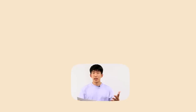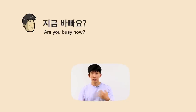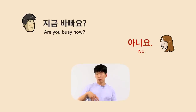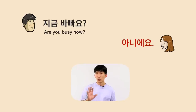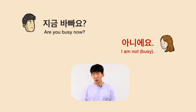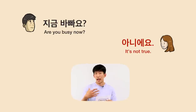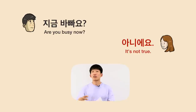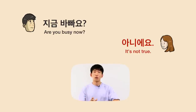Some examples: somebody can say 지금 바빠요, and you can say 아니요 — three syllables — which means 'no.' Or, given the same question 지금 바빠요, an answer can be 아니에요, which means 'I'm not busy' or 'it's not true.' In this case, what is being omitted? You're just saying it is not true — 아니에요. So 아니에요 can be used to mean 'no,' but it is important to understand that they are fundamentally, essentially different.